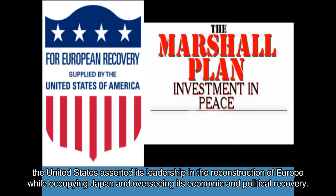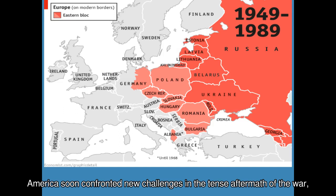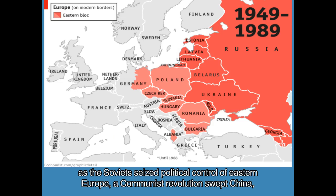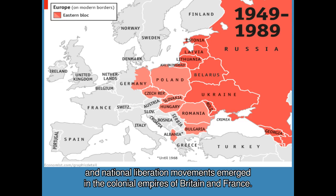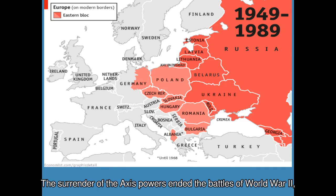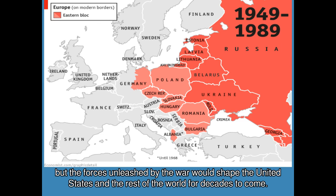America soon confronted new challenges in the tense aftermath of the war, as the Soviets seized political control of Eastern Europe, a communist revolution swept China, and national liberation movements emerged in the colonial empires of Britain and France. The surrender of the Axis powers ended the battles of World War II, but the forces unleashed by the war would shape the United States and the rest of the world for decades to come.